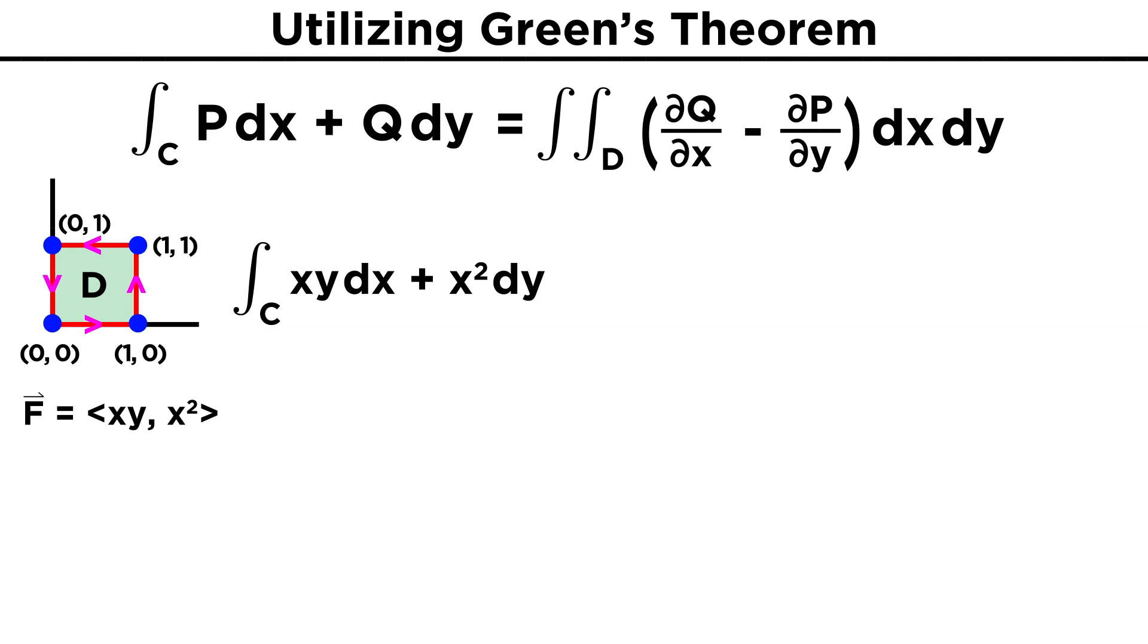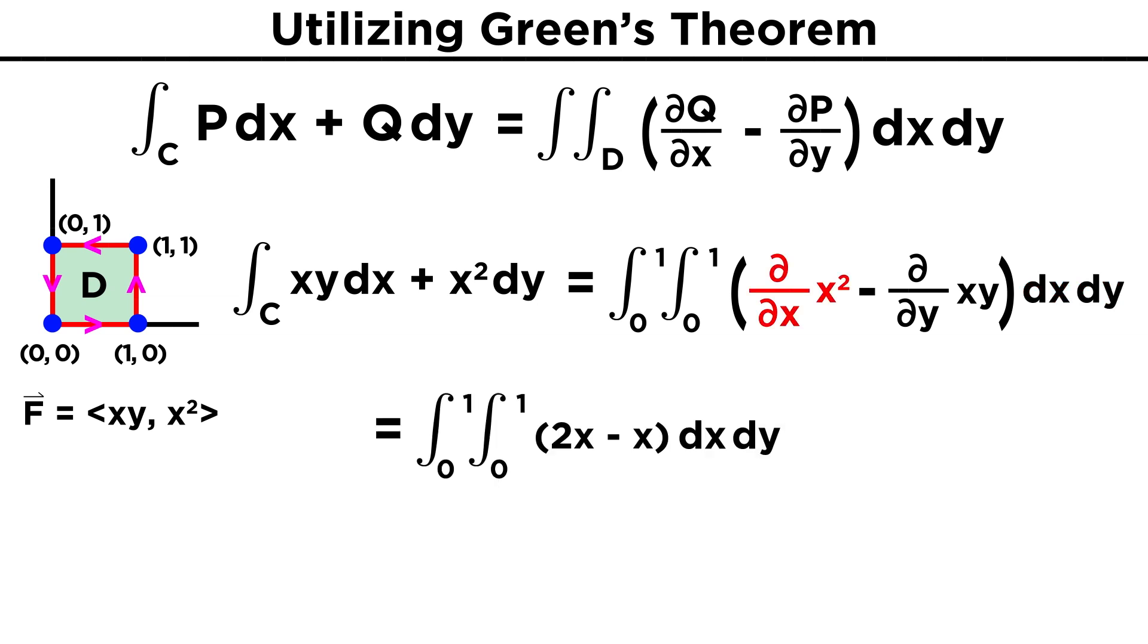Our integration domain D ends up simply being a square where x and y both run from zero to one, so we have a double integral over this region of dxdy. Our Q here is x², so dQ/dx is 2x. Our P is xy, so dP/dy is x. Plugging these in, we get the double integral of 2x minus x dxdy, or just x dxdy.